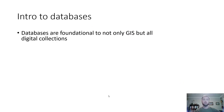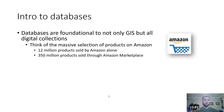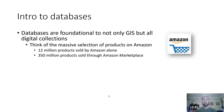Databases are foundational not only to GIS but to all digital collections. Think of the massive selection of products on Amazon — it's essentially a huge database of products. Amazon itself sells 12 million products, and an additional 350 million products are sold through the Amazon marketplace by third-party sellers. Imagine trying to organize that much product — you'd need to rely on very heavy-duty databases. They employ many hundreds, if not thousands, of people to manage these databases and keep track of products in real time.